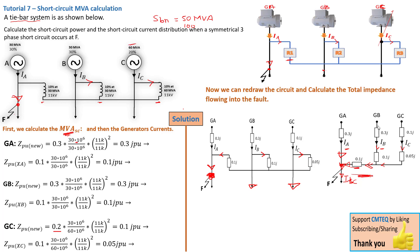From the get-go here, you can see that generator B has a 0.3 J per unit, and then there is a reactor here of 0.1. Those need to be combined because they are in series, and the same will be done on this section here. So that's the first thing we're going to do.